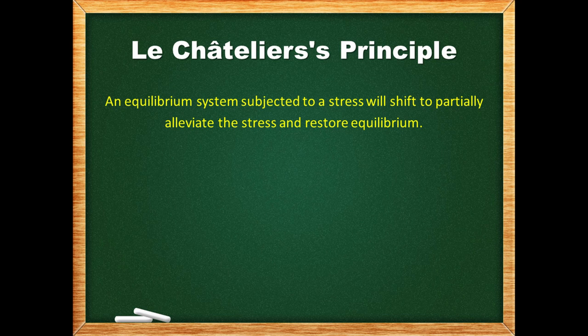Le Chatelier's principle states that an equilibrium system subjected to a stress will shift to partially alleviate the stress and restore equilibrium. Basically, when an equilibrium system is disrupted, it will shift its reactant and product concentrations, changing one into the other to reduce the disruption and re-establish equilibrium.